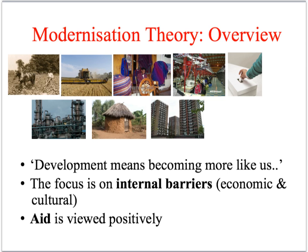As a quick reminder of the basic assumptions of modernisation theory: they say that the West is best — that development means poorer countries must follow the path already experienced by Western capitalist countries. To do that, they need to overcome their internal barriers to development, both economic and cultural. And finally, to help poorer countries overcome these internal barriers, they need foreign assistance — aid to invest in technological advancements and create the industrial infrastructure required to achieve economic take-off.